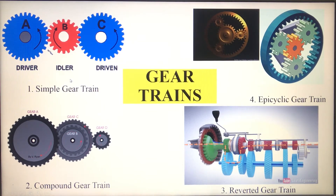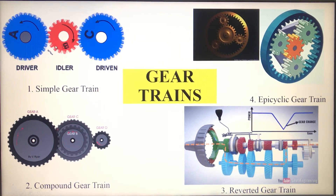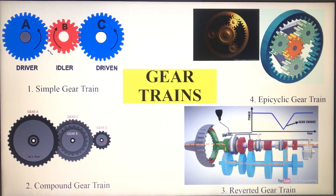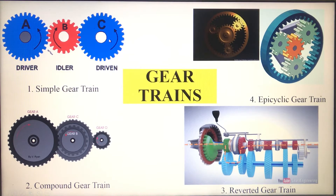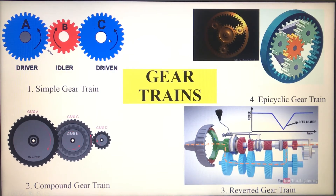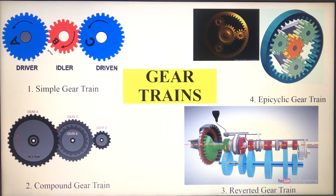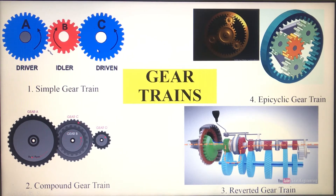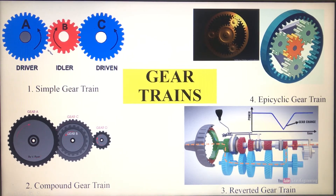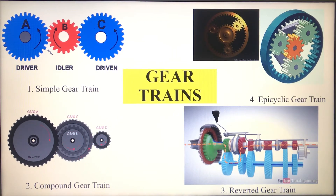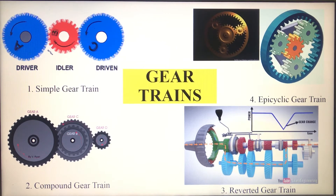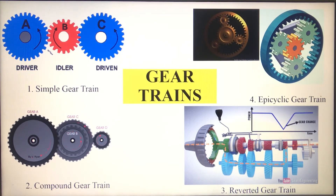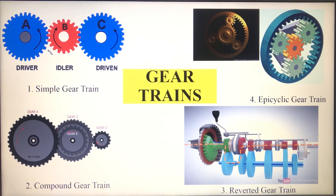In case of a simple gear train system, if you are having an odd number of gears, then the driver and the driven will rotate in opposite directions. If you are having an even number of gears, then the driver and the driven will rotate in the same direction. When it comes to applications, you can use this kind of simple gear train for automobile gearbox, lathe gearbox, and heavy duty press machine.